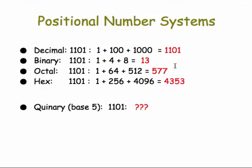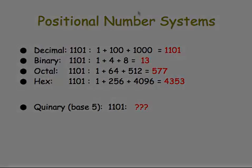All of these systems — decimal, binary, octal, hex — are all abstractions, of course. But they share a common pattern: the positional number system pattern, which is even more abstract. Once you know it, you can figure out the values of numbers written in any number system. To leave you with a challenge: think about the quinary number system, which is base 5. How would you translate 1101 into its value, assuming it's written as a base 5 number?